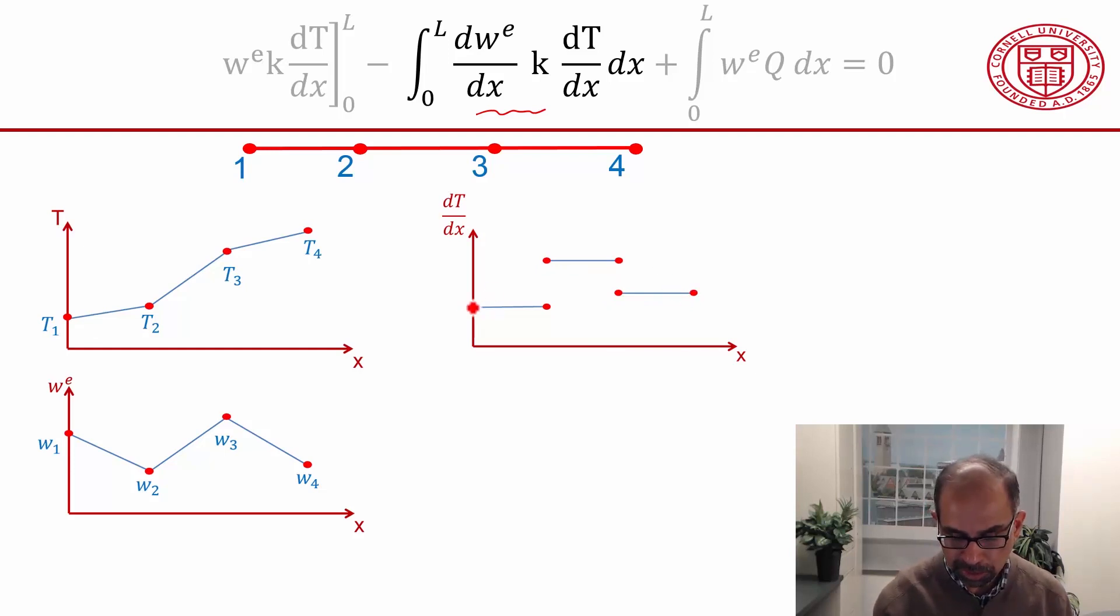And since we have a linear interpolation, the derivative is constant over each element. For instance, if I want to know what is the derivative over here, it's just going to be this value minus this value divided by the length of the element. So that value is going to be t2 minus t1 divided by delta x, correspondingly for this element and so on.